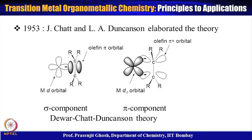The Dewar-Chatt-Duncanson theory revealed a fascinating discovery: during alkene-metal interaction, two interactions occur simultaneously. First, a sigma interaction from the olefin π orbital into an empty metal d-type orbital. Second, a π back-donation interaction from a filled metal d orbital into the vacant π* orbital of the olefinic ligand. These two interactions occur in a symbiotic fashion — each reinforcing the other — making the metal-olefin interaction very strong, with great implications for chemical industry and catalysis.